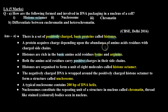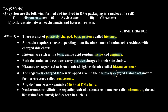Histone protein has 8 units, which forms the histone octamer, which is positively charged. Now DNA is negatively charged. So this negatively charged DNA coils around the positively charged histone octamer in four directions to create the nucleosome. So this is how the nucleosome is formed.